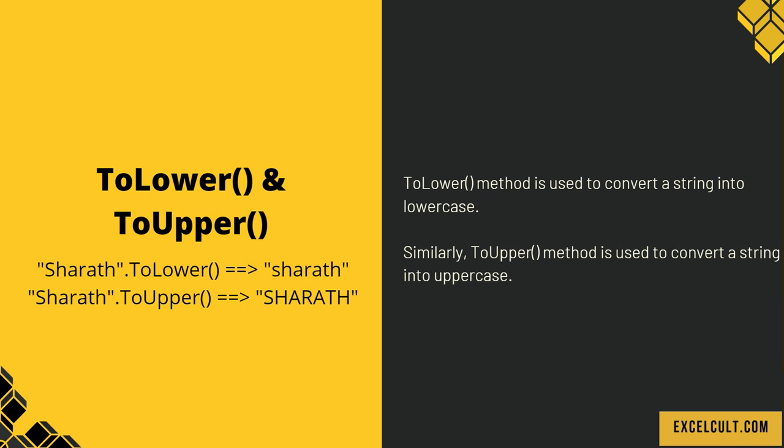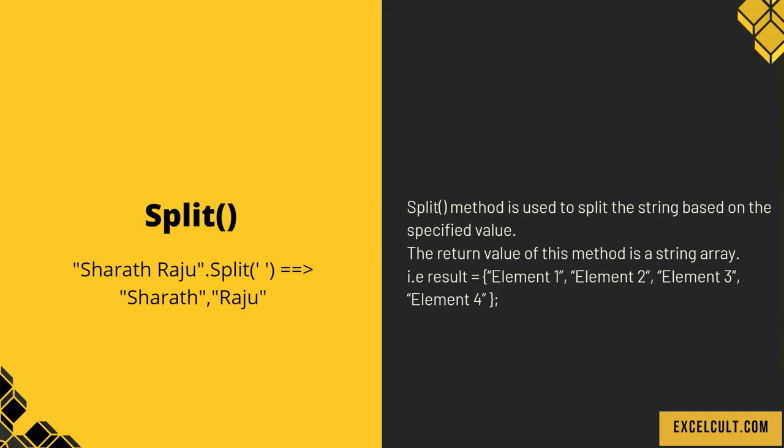Then toLowerCase and toUpperCase. The toLowerCase method is used to convert a string to lowercase; similarly toUpperCase converts a string to uppercase. You can see the examples on the left side. Then comes split. The split method is used to split a string based on a specified value, and the return value is a string array. For example, splitting a string using a space results in an array with two values: 'SHERATH' and 'RAJU'.